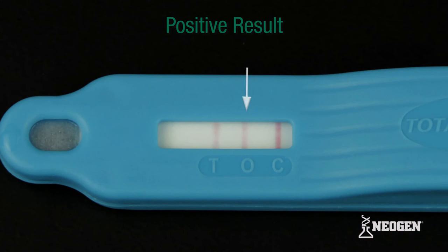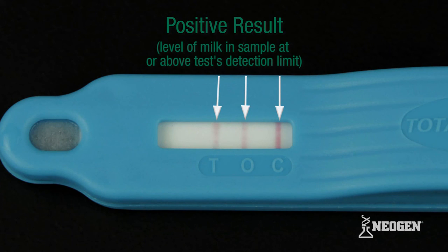Positive result. Lines visible at positions O and C, together with a line of any intensity visible at position T, indicates the level of milk in the sample was determined to be at or above the test detection limit.